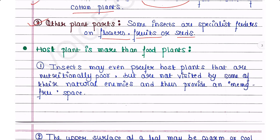Host plant is more than just a food plant. Plants do not only provide food — insects may even prefer host plants that are nutritionally poor but are not visited by some of their natural enemies, thus providing an enemy-free space. Some plants harbor insects because the natural enemies of those insects cannot survive in those plants, so although they are not nutritionally rich, they provide enemy-free space.